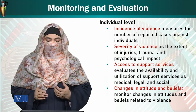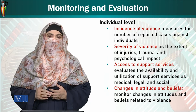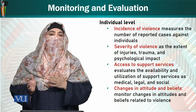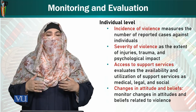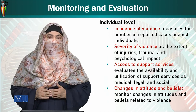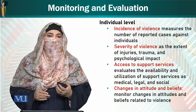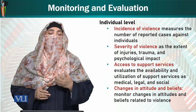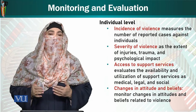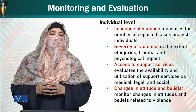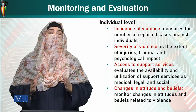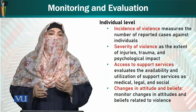Access to support services evaluates the availability and utilization of support services — medical, legal, and social. How much access children had to these support services, how much they utilized them, and how much these services played a role in reducing violence against children. Changes in attitude and beliefs are also monitored — that's about parents, children, and educators. Whether stakeholders' attitudes have changed, whether they recognize violence as violence, and what actions were taken.